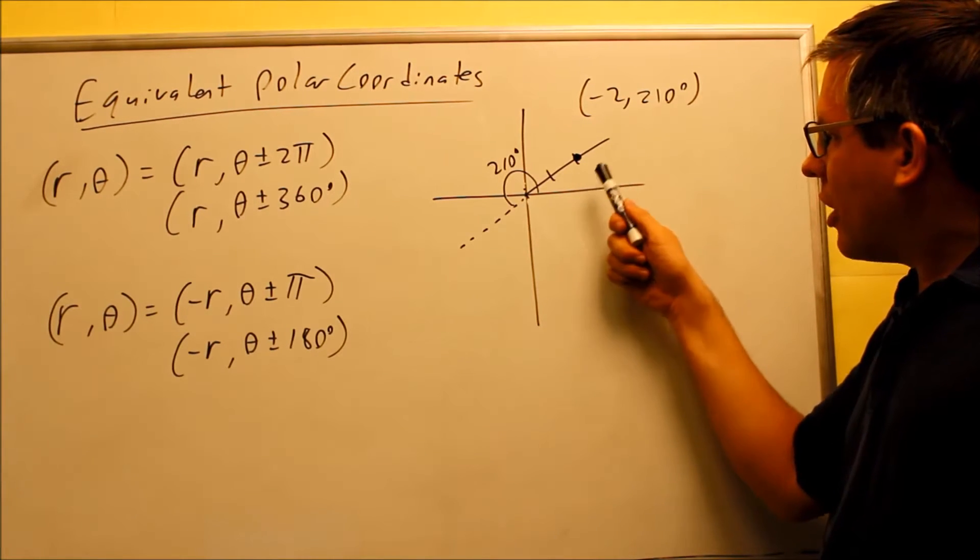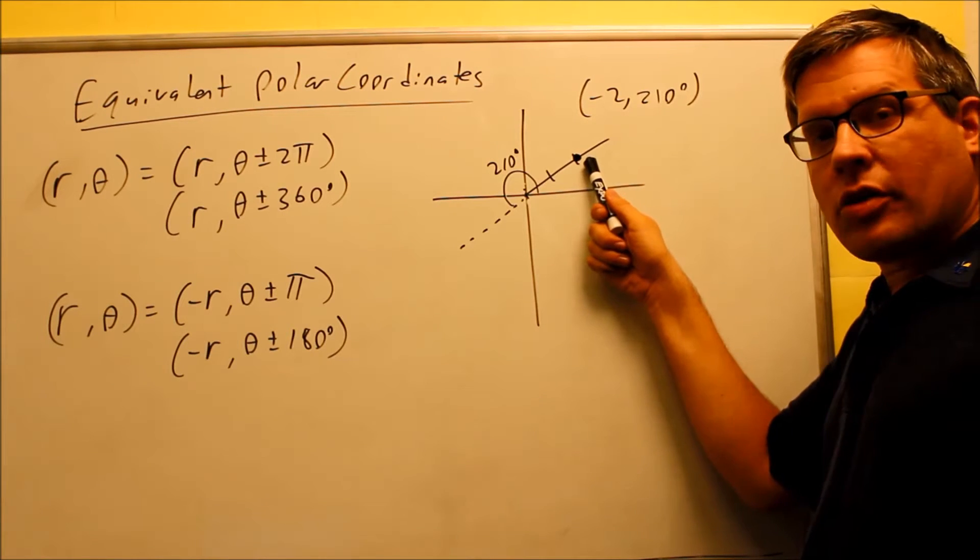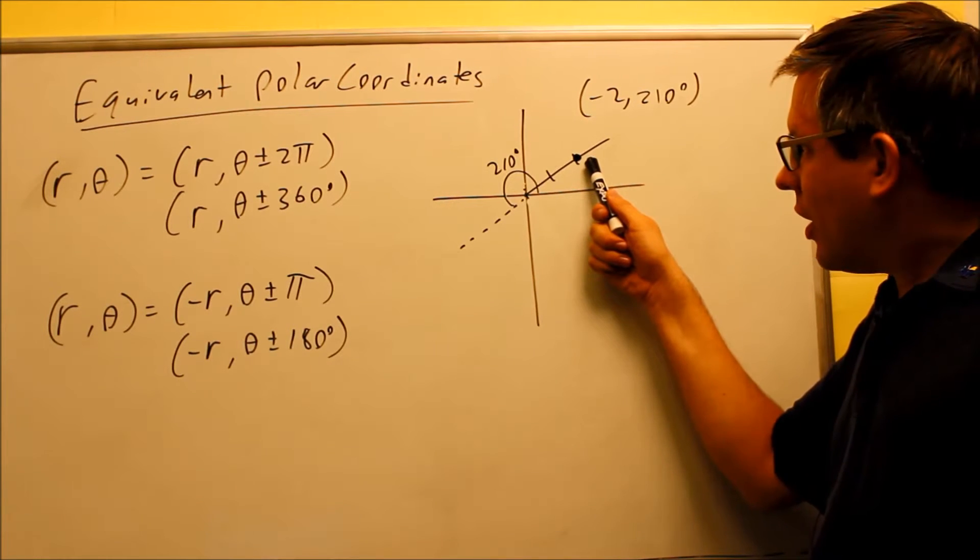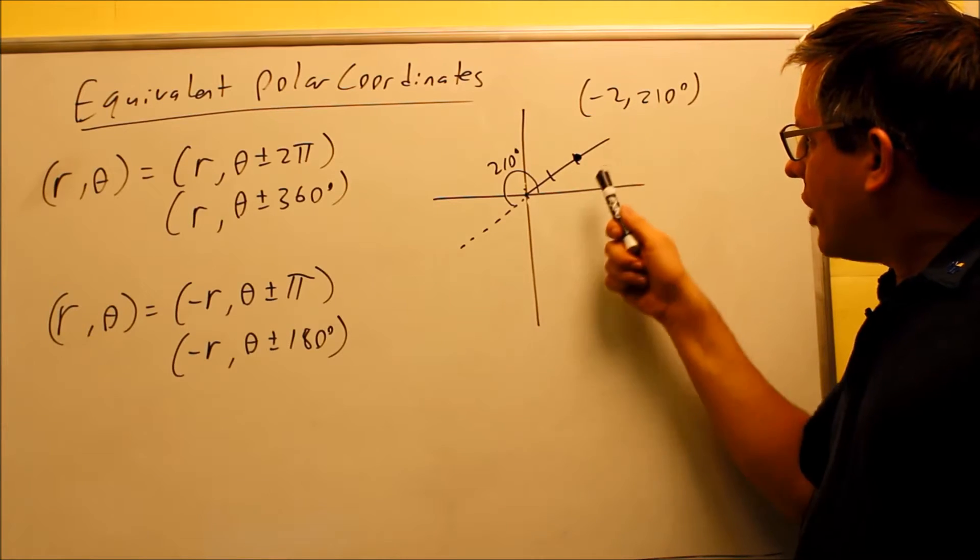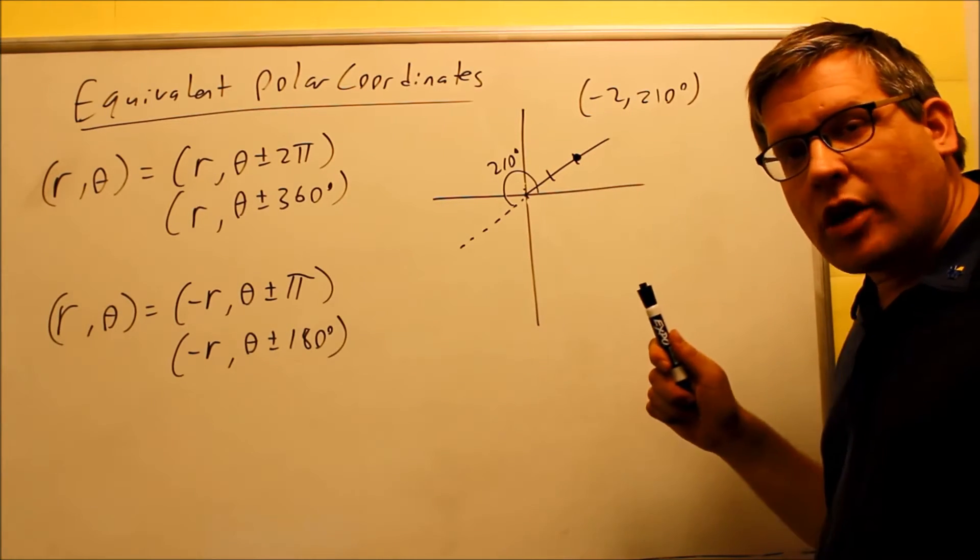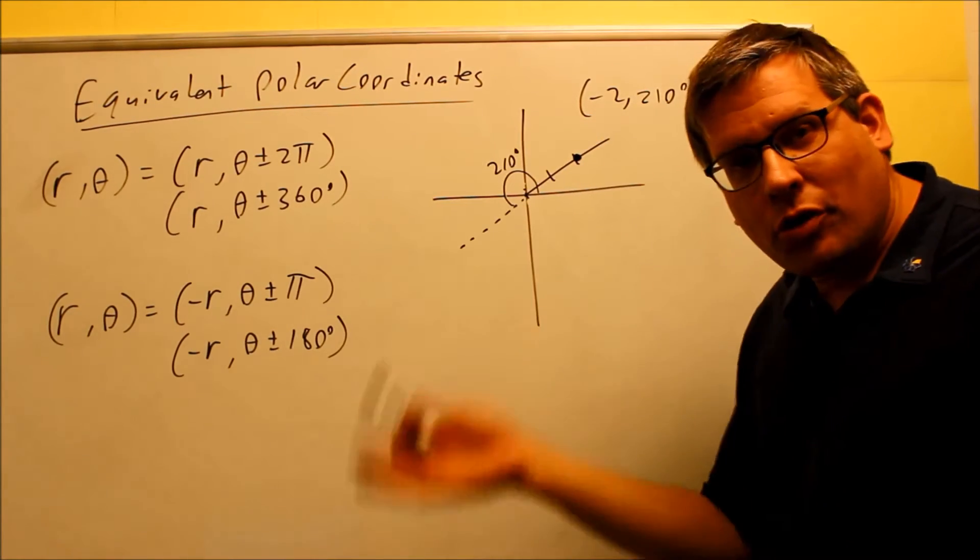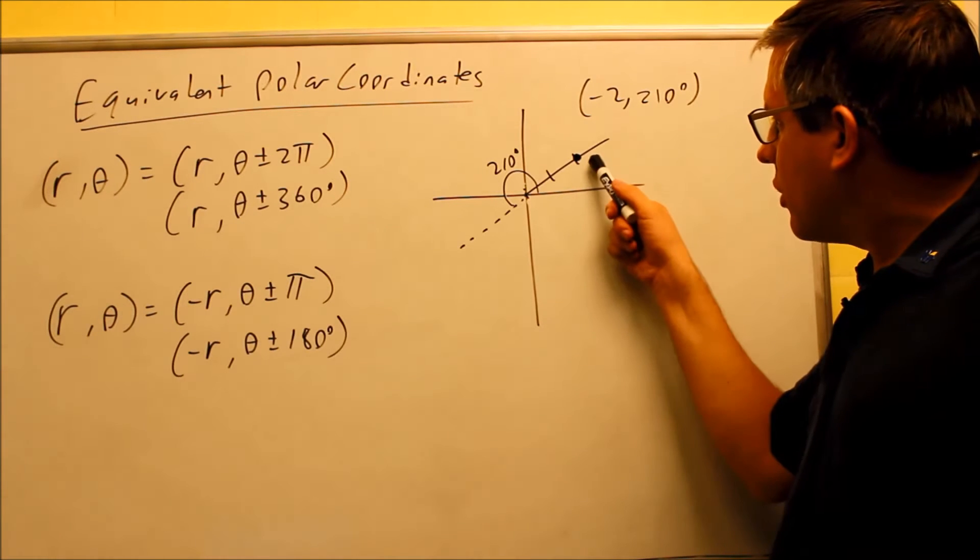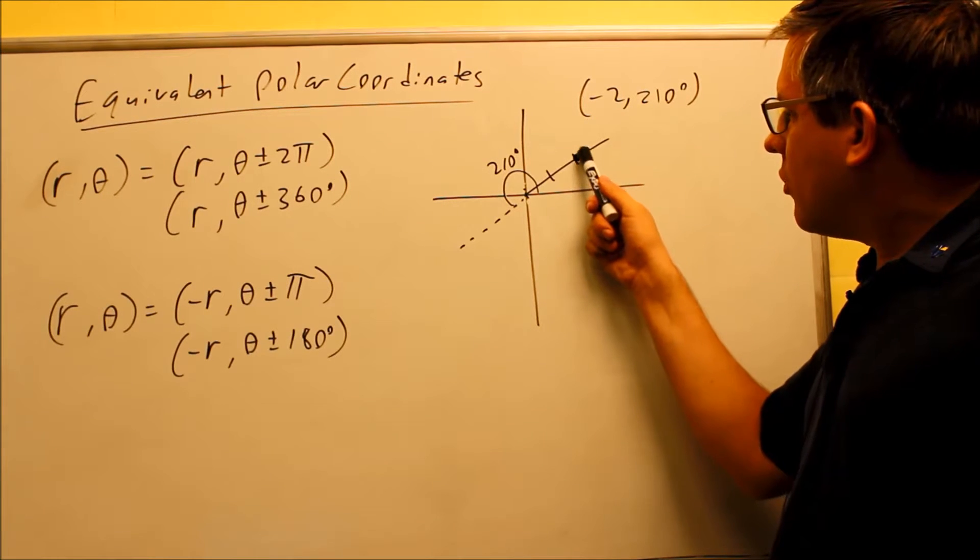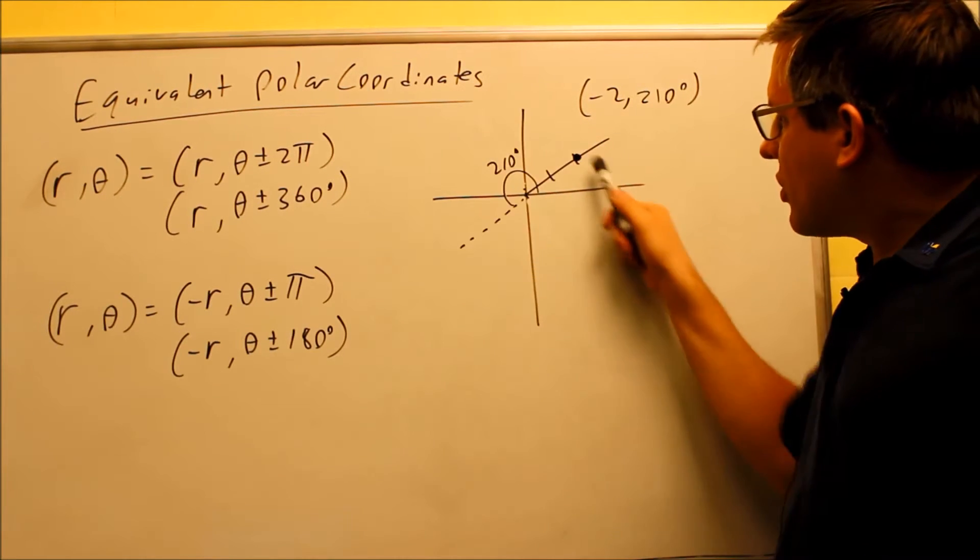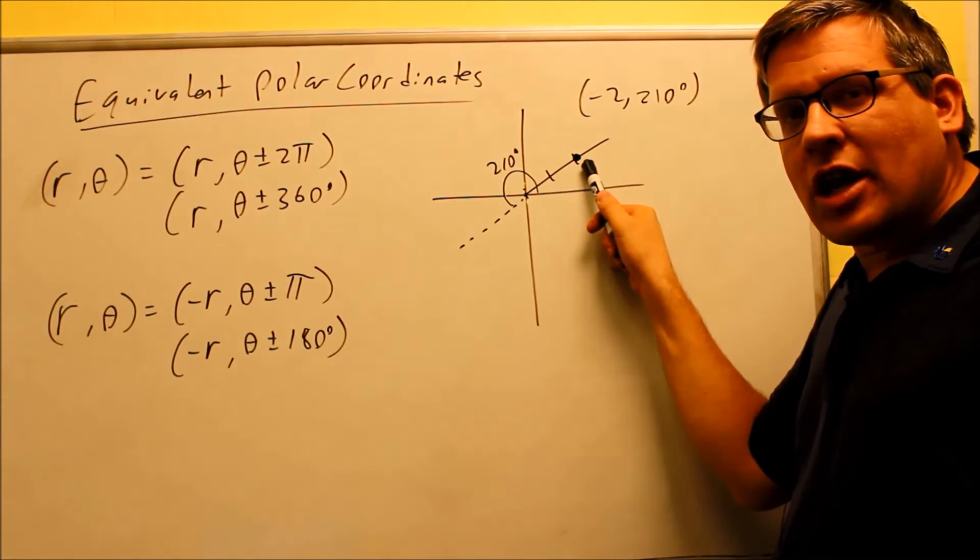So for instance, let's suppose that I wanted to keep my r the same, and instead of having a value of 210, maybe I want one only in the first quadrant, or maybe I want an angle that's more than 360. Well, the way that we can do that is, the point that you are right here, if you add 360 around, that's going to take you to exactly the same spot.